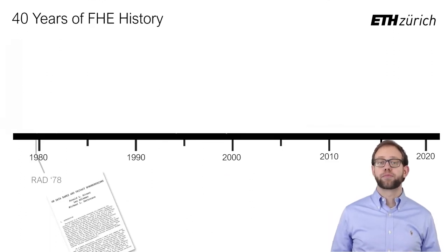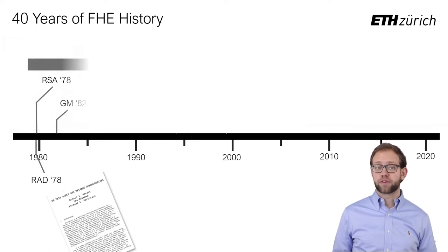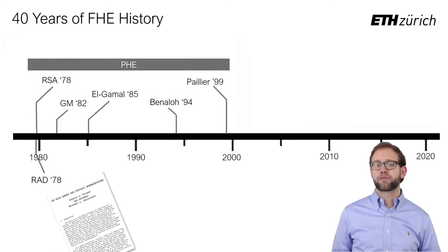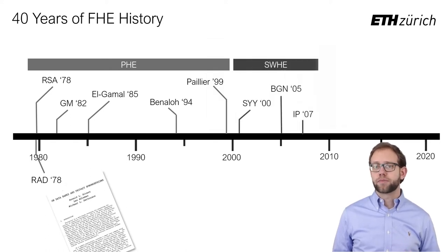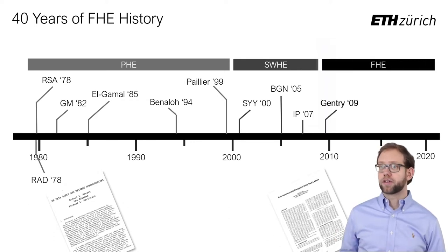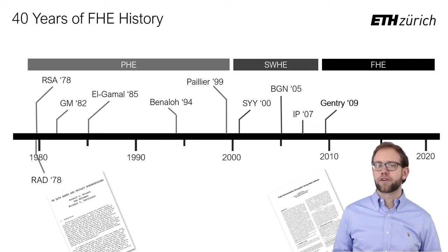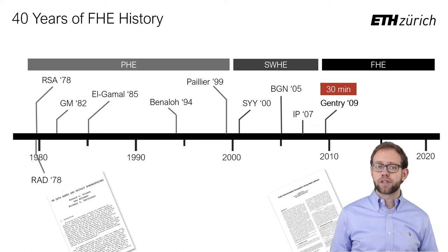FHE has been proposed under a slightly different name as far back as 1978, but it remained an unachievable goal for many decades. While partially homomorphic schemes have been known for decades, progress towards fully homomorphic encryption really only started to accelerate in the 2000s. It wasn't until the breakthrough result by Craig Gentry in 2009 that we had schemes that could support arbitrary computations. Gentry's initial scheme was asymptotically efficient but practically unimplementable; however, follow-up work soon allowed a first implementation. Nevertheless, these first-generation schemes still took around half an hour to perform a single multiplication, a slowdown of over a trillion times compared to a standard CPU multiplication instruction.